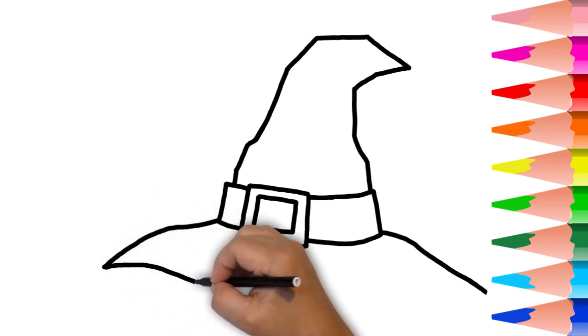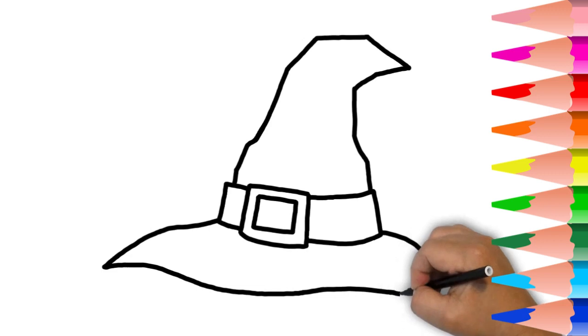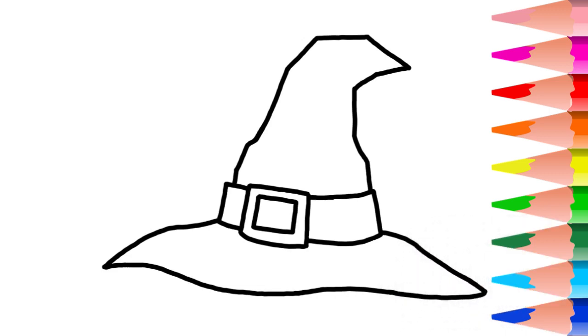Next, connect the bottom of these two lines with a line for the rim of the hat. It is better to not make this line exactly straight to give it a more realistic appearance.